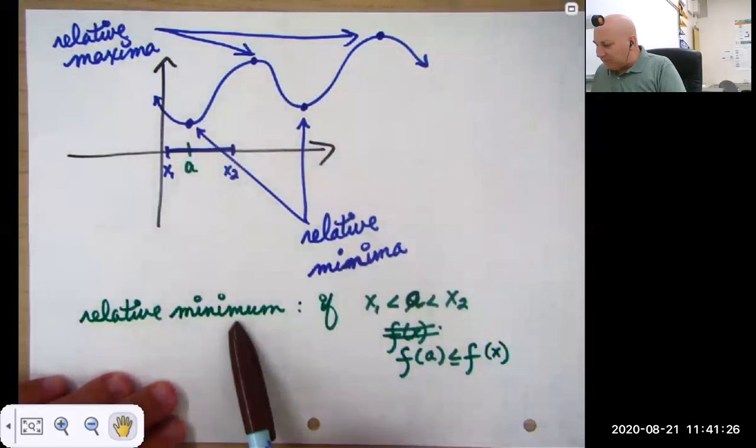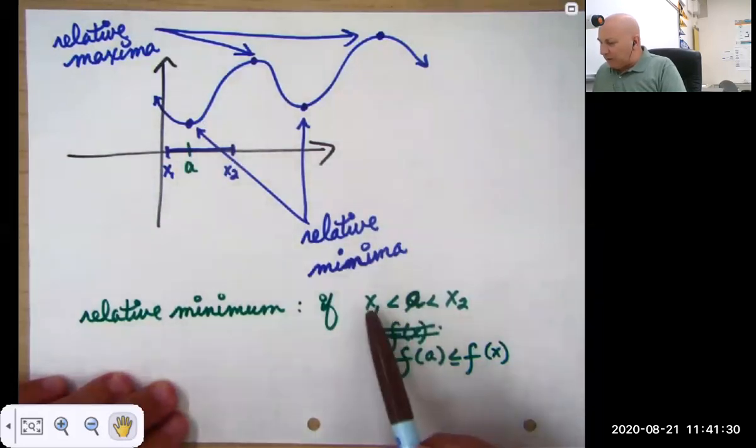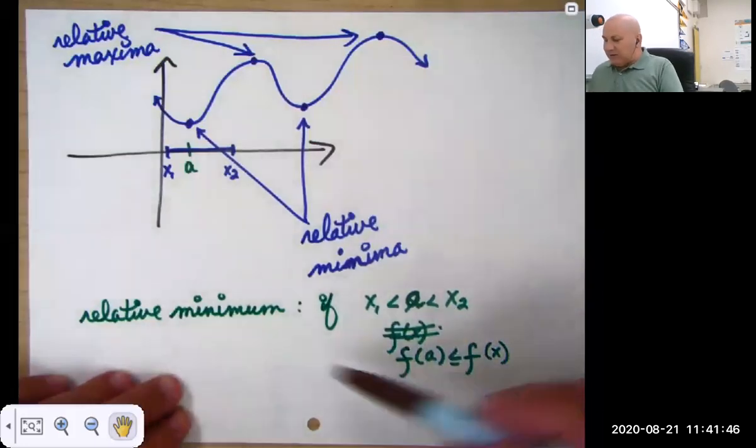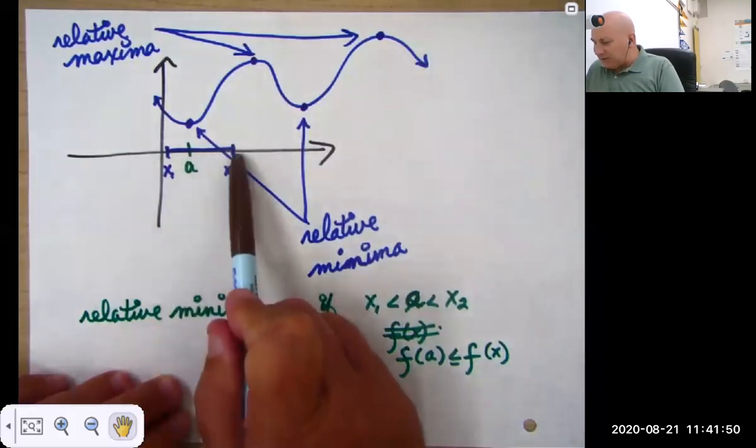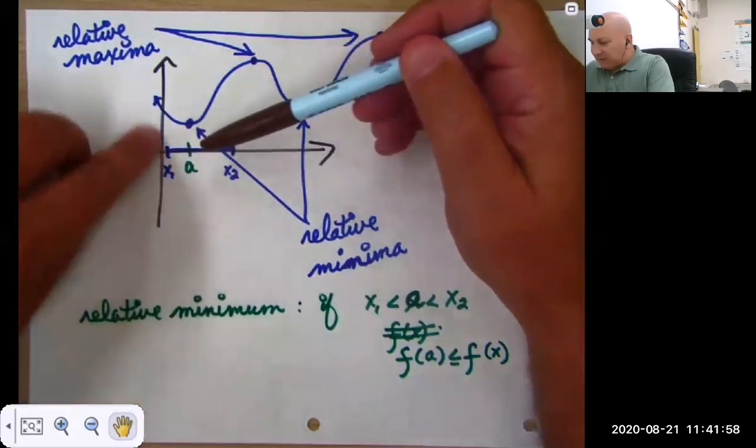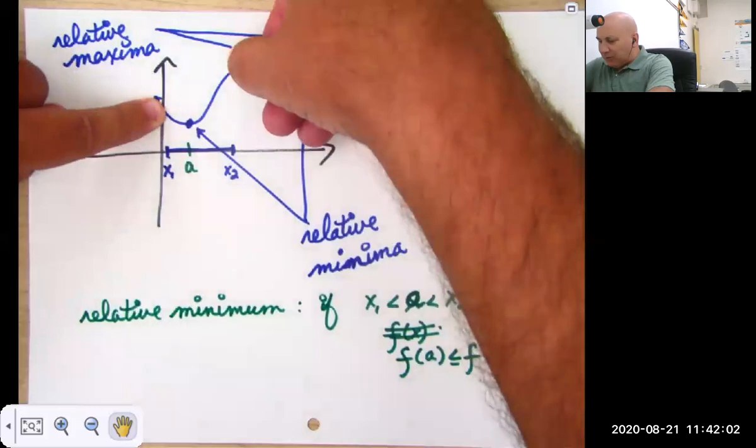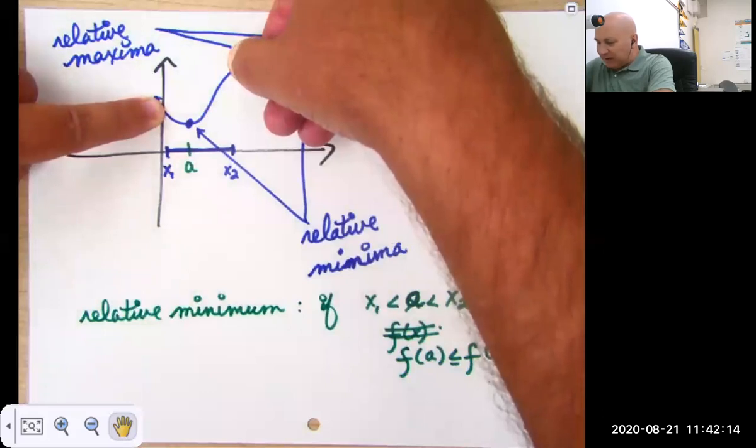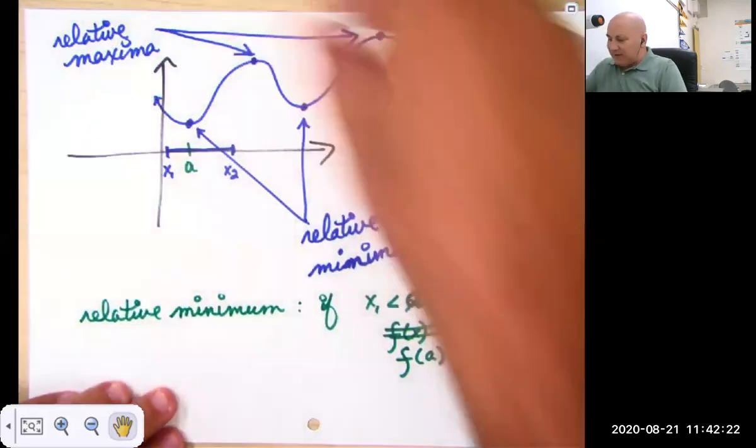So the definition of a relative minimum is if a is somewhere between x1 and x2, if f of a is less than or equal to every y value in that interval, then it's a relative minimum. Let's take a look. Here's x1 and x2, randomly chosen. Here's point a. So if we look at the graph, we're only looking at the graph in this neighborhood between x1 and x2. Now is f of a, so the y value at point a, is that less than or equal to every other y value on that graph in that interval? The answer is yes. So a is a relative minimum.